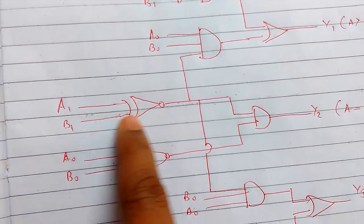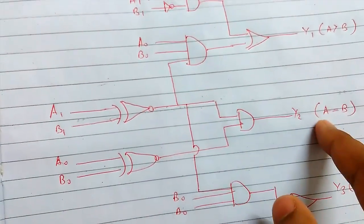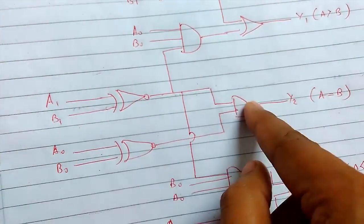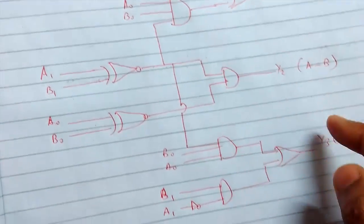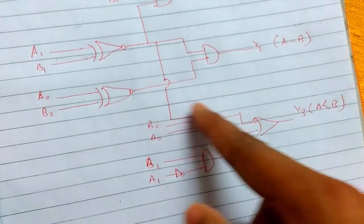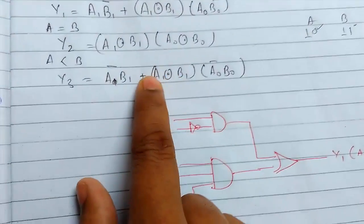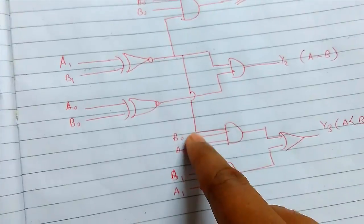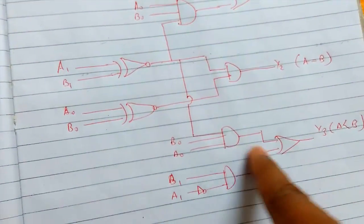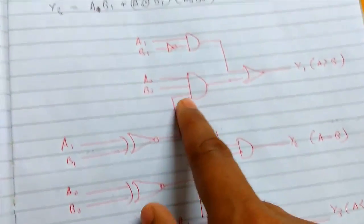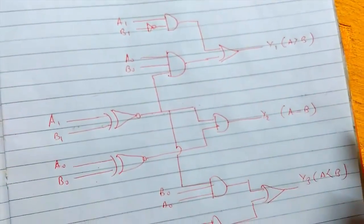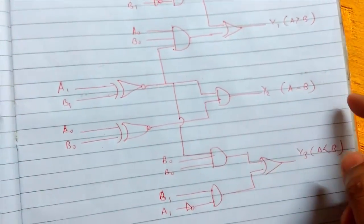This is for the case when it is equal, XNOR of both digits, both bits. This is for when it is less, we need this part also. We can see from here we need this part, so this comes from here and the AND operation and the OR operation. And similarly for this greater part. So this was for two bits.